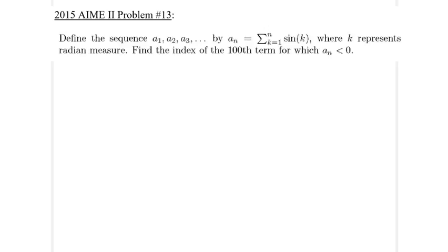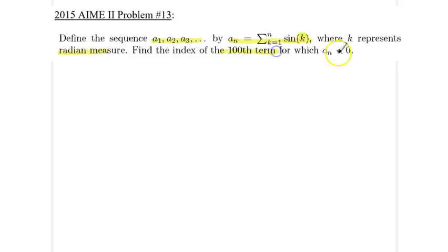Hello, my friends. Today we will be going over 2015 AMC problem number 13. We are given a sequence of numbers a₁ through aₙ defined as a summation of trigonometric functions — specifically a summation of sine functions — where the argument k is given in radian measure.